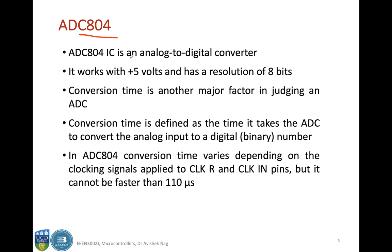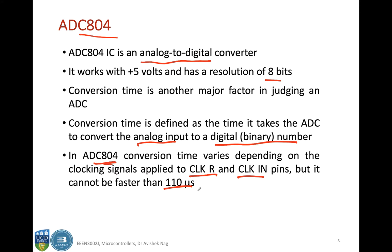ADC 804 is an IC which is an analog to digital converter. It works with plus 5 volts and has a resolution of 8 bits. The conversion time is another major factor in judging an ADC — it is defined as the time it takes the ADC to convert the analog input to a digital binary number. The conversion time varies depending on the clock signals applied to this IC.